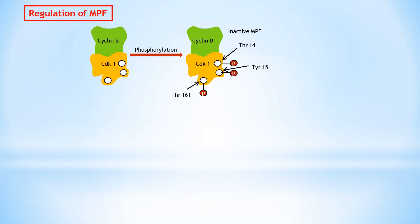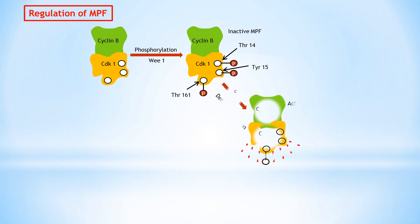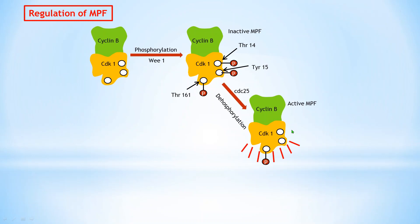Tyrosine 15 is the inhibitory phosphorylation region, and phosphorylation at tyrosine 15 is catalyzed by a protein kinase called Wee1. The G2-to-M transition is brought about by activation of the cyclin B–CDK1 complex or MPF by a protein phosphatase called CDC25. Phosphatases are enzymes that remove phosphate from a substrate. CDC25 dephosphorylates the inhibitory phosphorylation at threonine 14 and tyrosine 15.